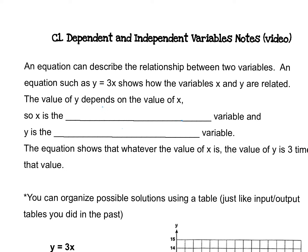An equation can describe the relationship between two variables. We're going to jump back to equations now. An equation such as y equals 3x shows how the variables x and y are related. The value of y depends on the value of x. So x is the independent variable and y is the dependent variable.